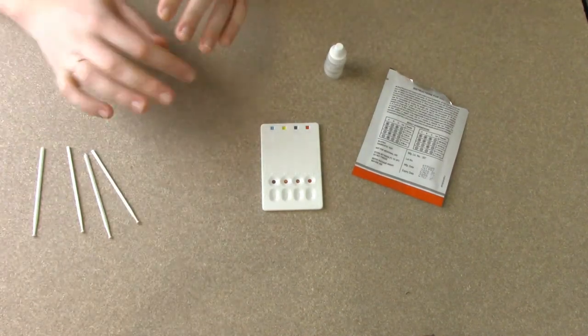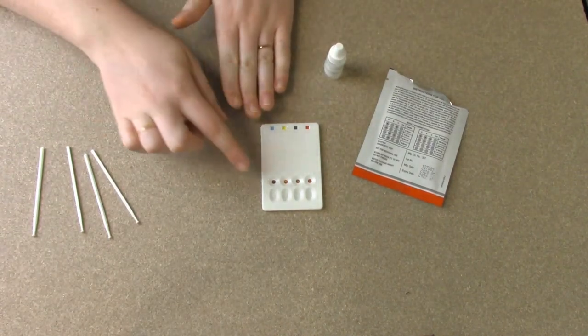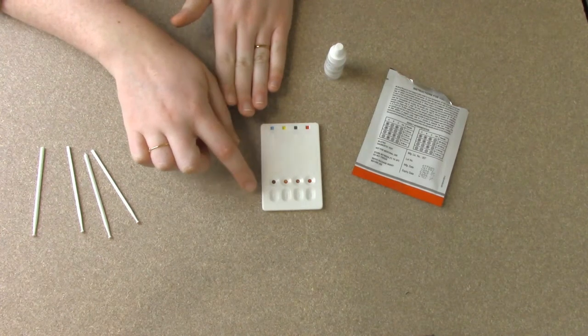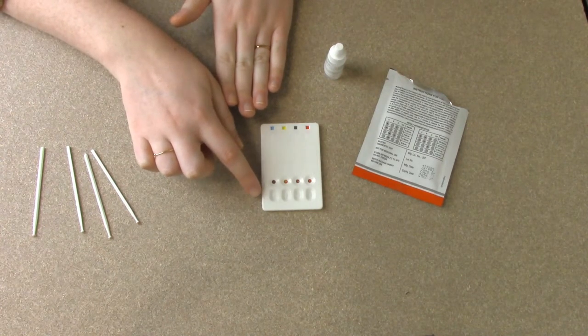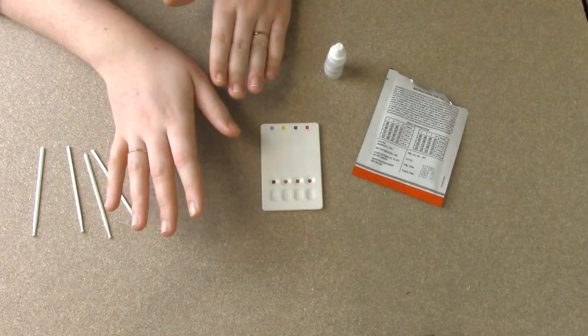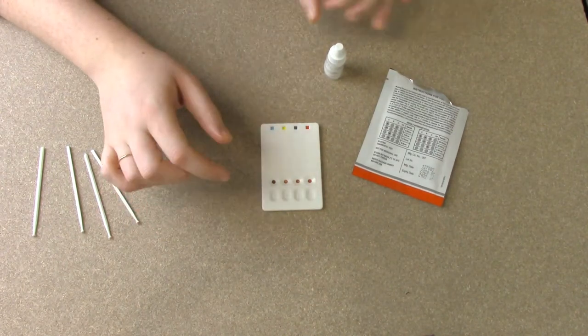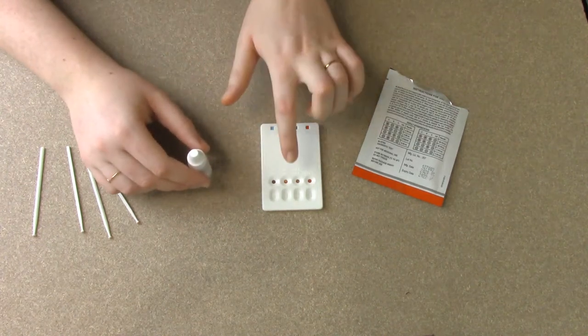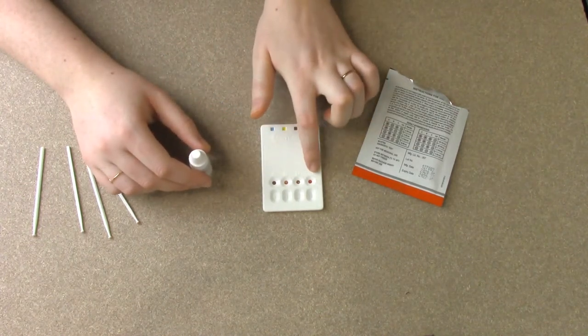So the next step is just to let the blood sit in the wells. Remembering this is only in row S. We're not doing anything with row R yet. Row S, let it sit for 45 to 60 seconds, just a moment so that the pads in all four of these can really absorb the blood samples.